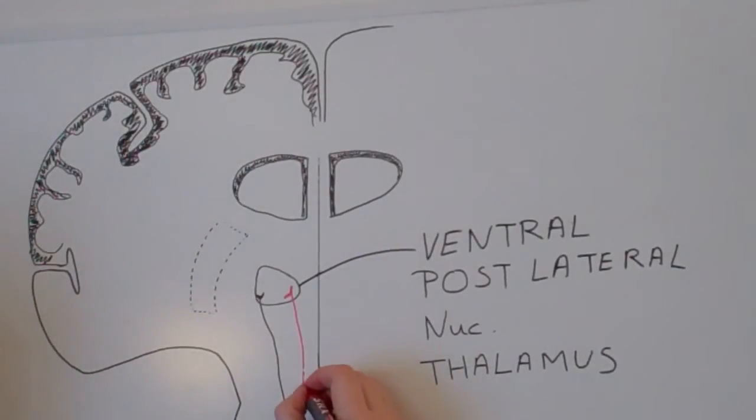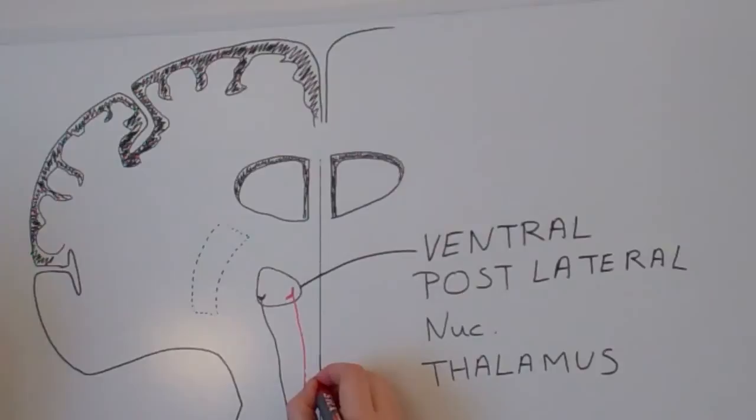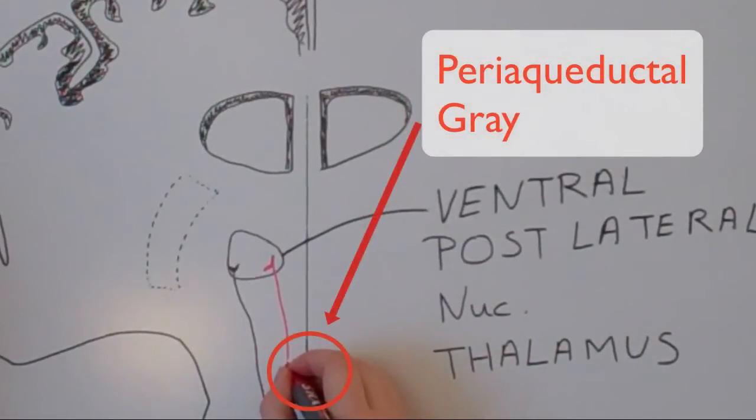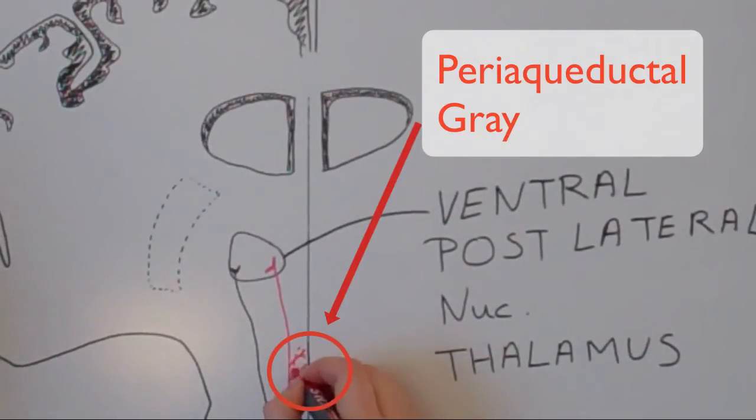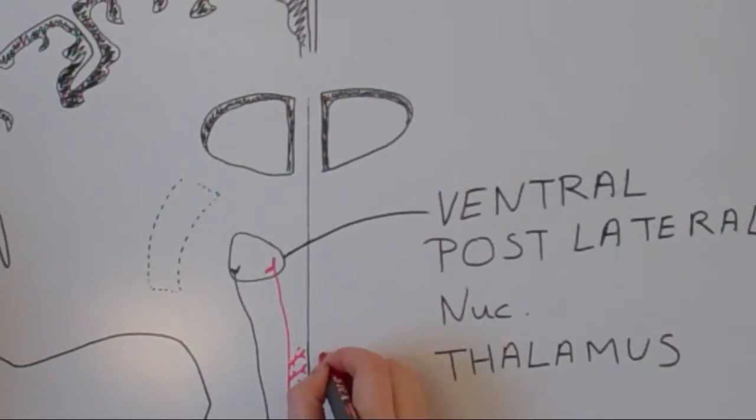Along the way, some secondary neurons send out branches that synapse in the reticular formation, or in the periaqueductal gray. It's in these regions that pain sensations can be down-regulated by the brain.